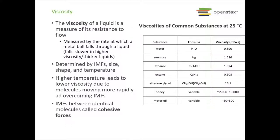So we're going to start with viscosity. The viscosity of a liquid is a measure of its resistance to flow. It's measured by the rate at which a metal ball falls through a liquid. If you have a higher viscosity or thicker liquid, it's going to fall slower because the liquid is going to resist it more.